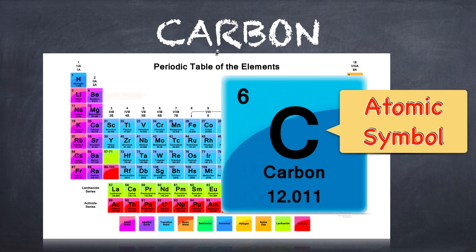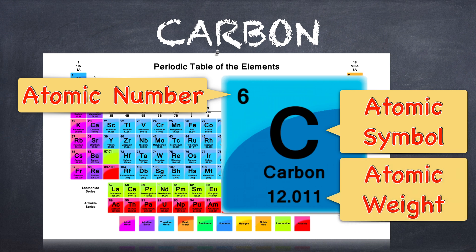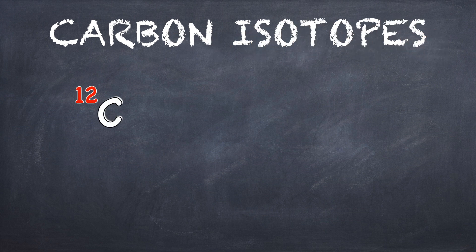Carbon has an atomic symbol C. It has an atomic number of six with an atomic weight of 12.011.